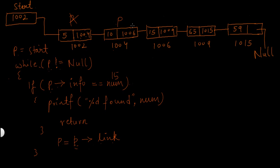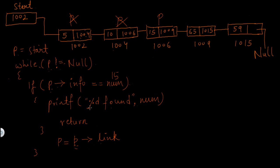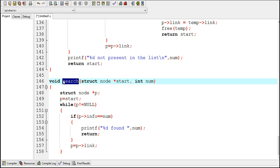Now p means the third node because p is storing its address. Again the while condition is checked — p is not equal to null, so it's true. The if condition will be checked. p->info means the info part of this node which is 15, and 15 is equal to the number entered by the user, so this if condition is true. These two statements will get executed — this printf statement will print '15 found'. Now my purpose is served; I just want to get out of this function. With the help of this return statement the control will move out of the search function.